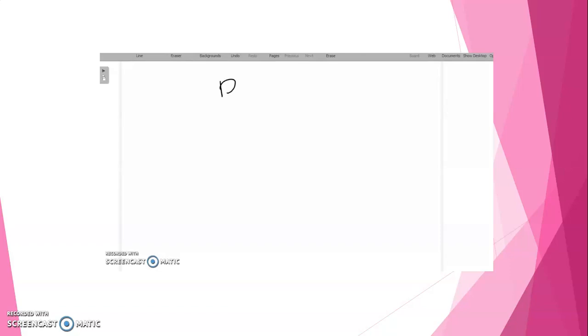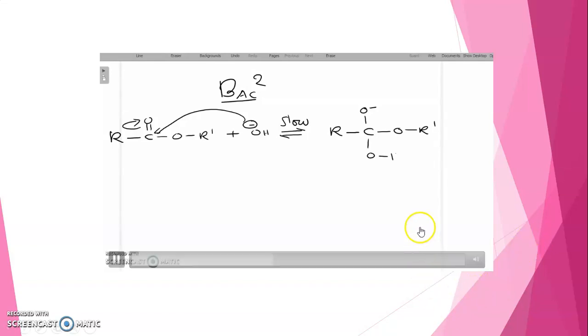Next, we have BAC2 type mechanism: Base catalyzed, acyl cleavage, and second order. First step of the mechanism is the attack by the hydroxide on this carbon to form a tetrahedral intermediate, and this is also the slowest step and hence it is a second order reaction.